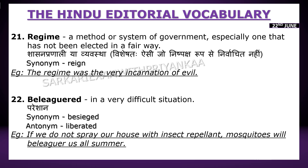The next one is 'beleaguer'. Beleaguer ka matlab hota hai jab koi vyakti bahut difficult situation mein hota hai, ya agar koi person chaaro taraf se gher liya gaya ho — usse beleaguer kaha jata hai. Synonym: besiege. Antonym: liberated. Example: 'If we do not spray our house with insect repellent, mosquitoes will beleaguer us all summer.'